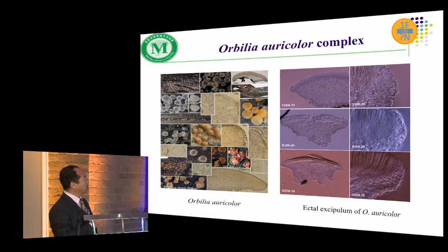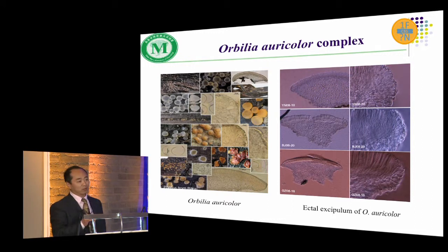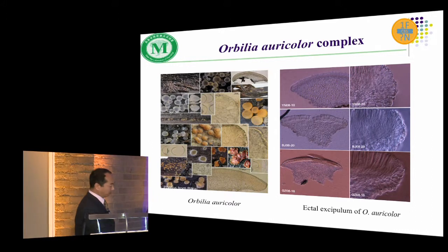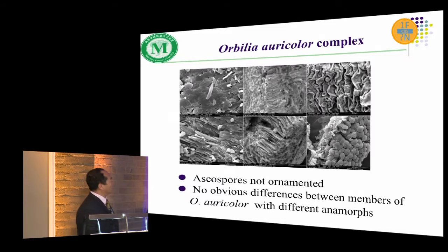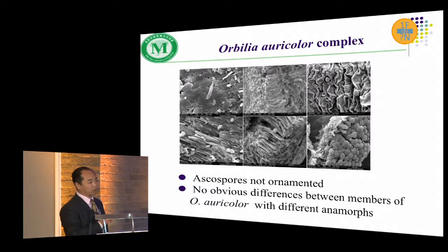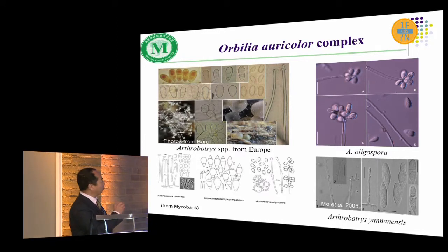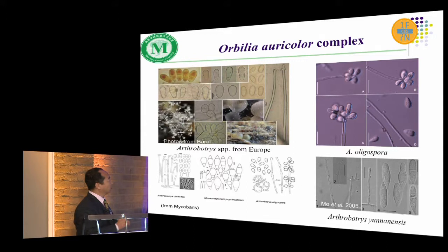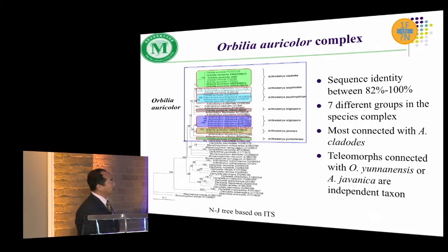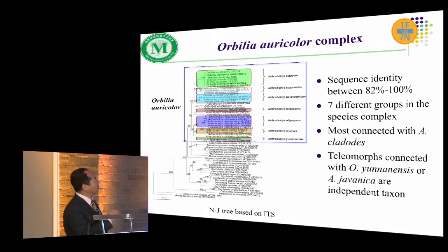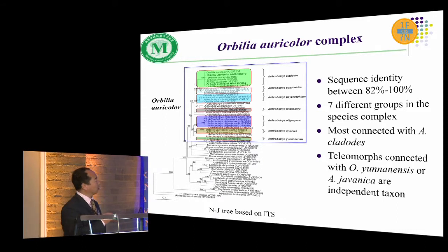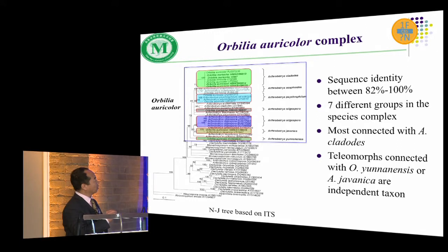Here is Orbilia oricana. At first we tried to find more morphological characteristics but we failed because they could not be connected with anamorphs, and we also found no differences in ascospores — they are quite tiny. The anamorphic forms are quite different, with different spore types. We did the phylogenetic analysis and found seven different groups connected with these species, with sequence identity between 82 to 100%, and most connections are with Arthrobotrys cladobotryoides.